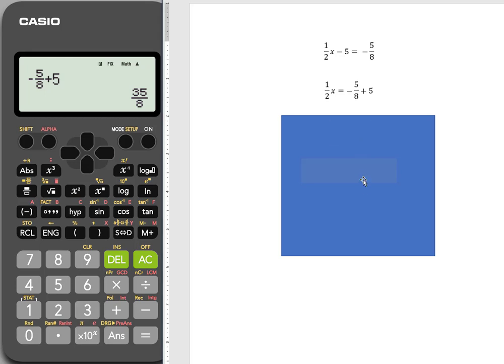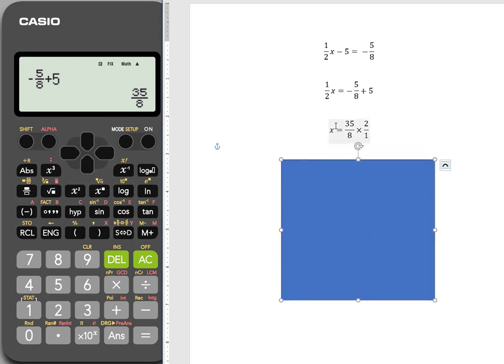So now I go down to the next step in this. Here's my 35 eighths. The next step is to multiply by the reciprocal of 1 over half to isolate the x. So I'm going to multiply both sides by 2 over 1. That's this work.